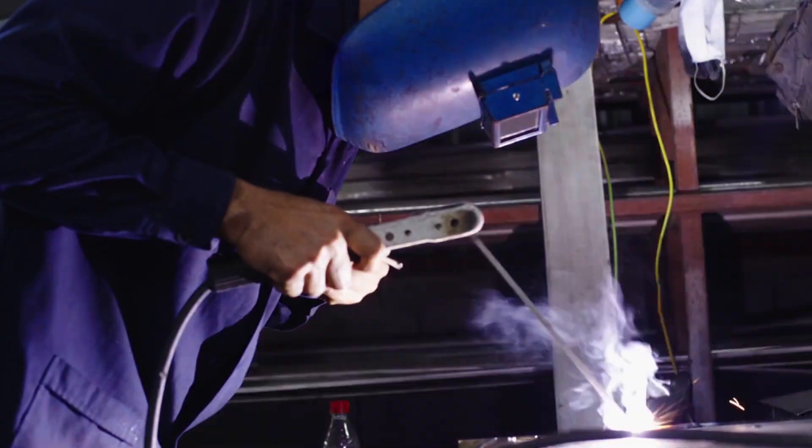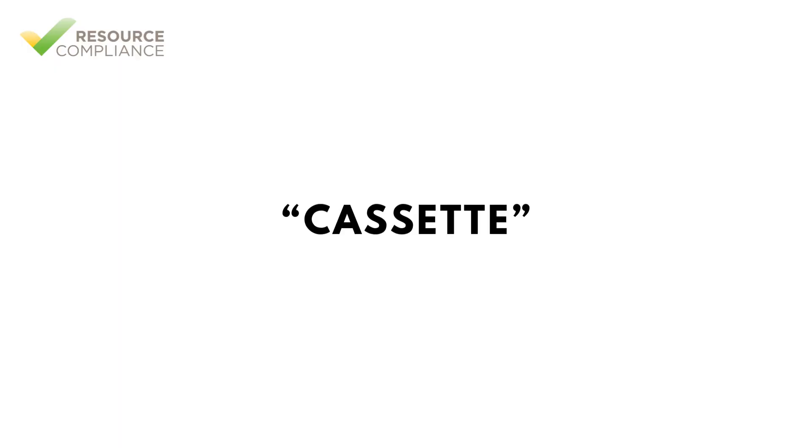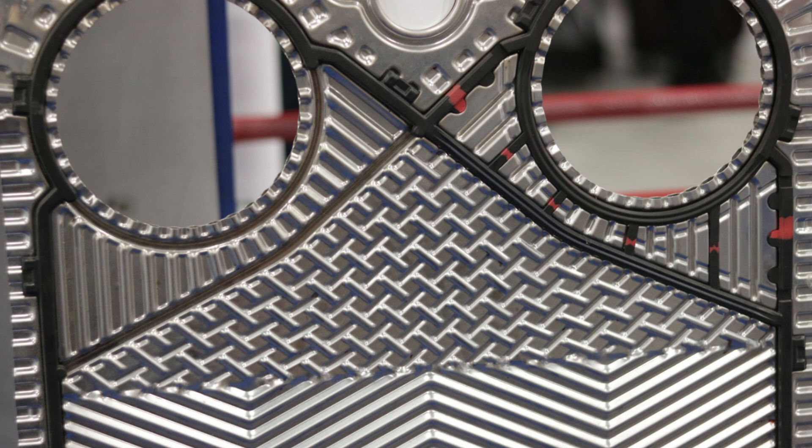Plate and frame heat exchangers are attractive because of their compact size, high efficiency and ease of maintenance. A pair of plates is often called a cassette. The number of cassettes required will depend on the evaporator load. The cassettes are held together in a frame. The frame can be adjusted to add or remove plates if the refrigeration needs change.